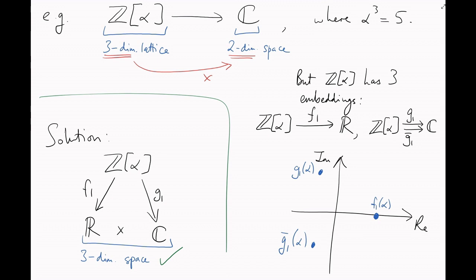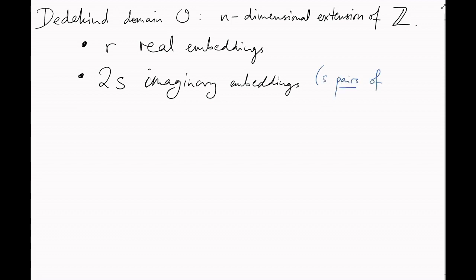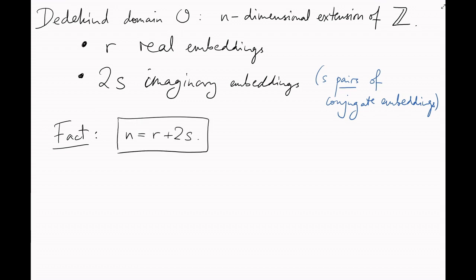And this is actually true very generally. Let's take a Dedekind domain O, which is an n-dimensional extension of z. That is, its additive picture is an n-dimensional lattice. Call the number of real embeddings R, and the number of imaginary embeddings 2 times S. That is, S complex conjugate pairs of imaginary embeddings. Then it turns out that n equals R plus 2S.